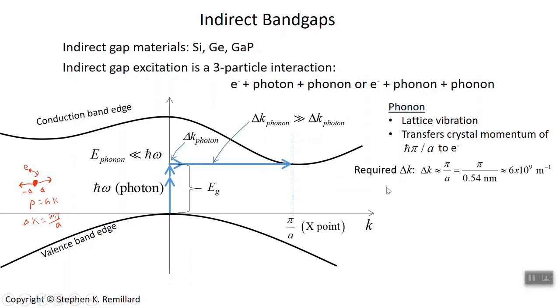Now, how much momentum change does the electron actually require to go from the valence band into the conduction band? And the simpler question is, how much wavenumber change k is required? Because remember, k times h-bar is momentum. Change in wavenumber has to go from k of 0 to k of pi over A. So pi over A is the change in wavenumber. We can calculate a number by using the lattice constant of silicon, 0.54 nanometers, and we get 6 times 10 to the ninth per meter is the required delta k.